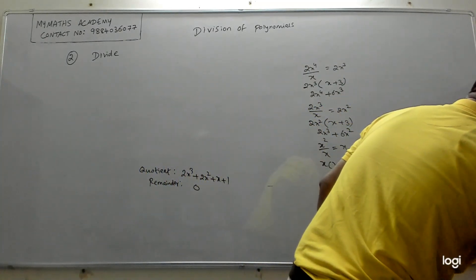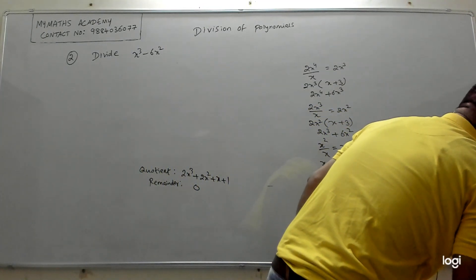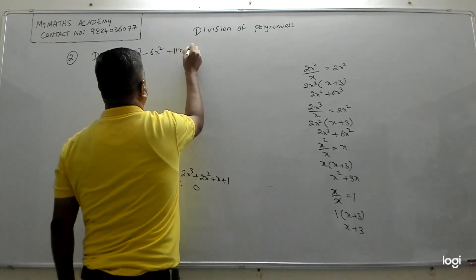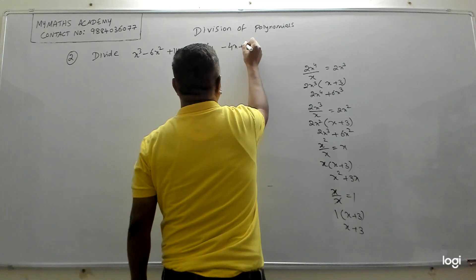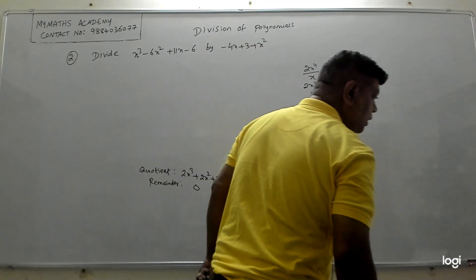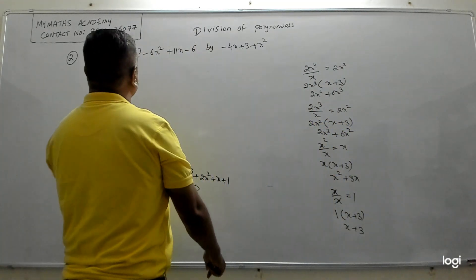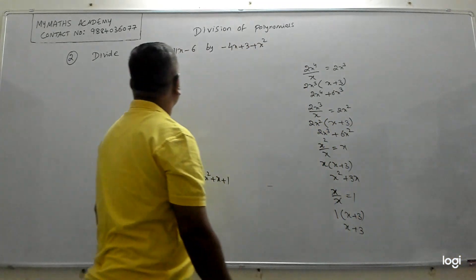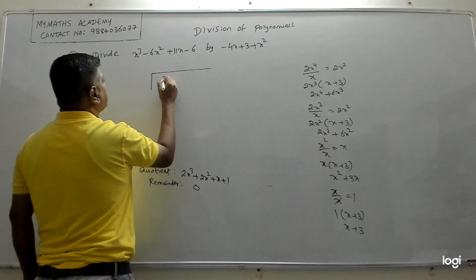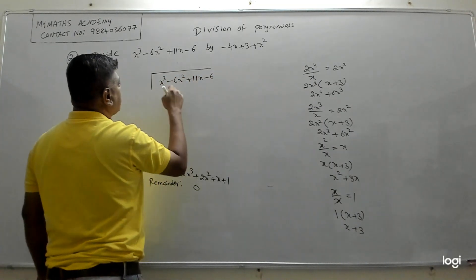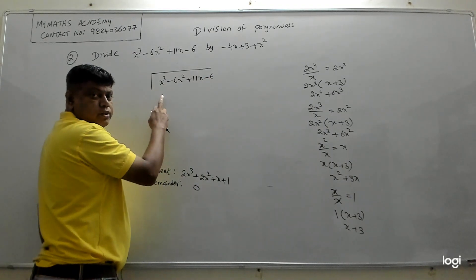The second question is: divide x³ − 6x² + 11x − 6 by x² − 4x + 3. We put the dividend inside and write it with the highest power first: x³, then x², then x, then the constant. Here also arrange the divisor with the highest power first: x², then x, then the number.